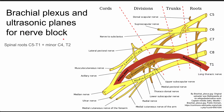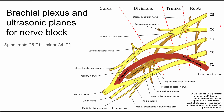The brachial plexus starts with spinal roots C5 to T1, which you can see listed here. The spinal cord is on this side and the extremity goes out in this direction, with the hand somewhere on this side. Spinal roots C5 to T1 start here, and there are also minor contributions from C4 and T2, but those are less important.